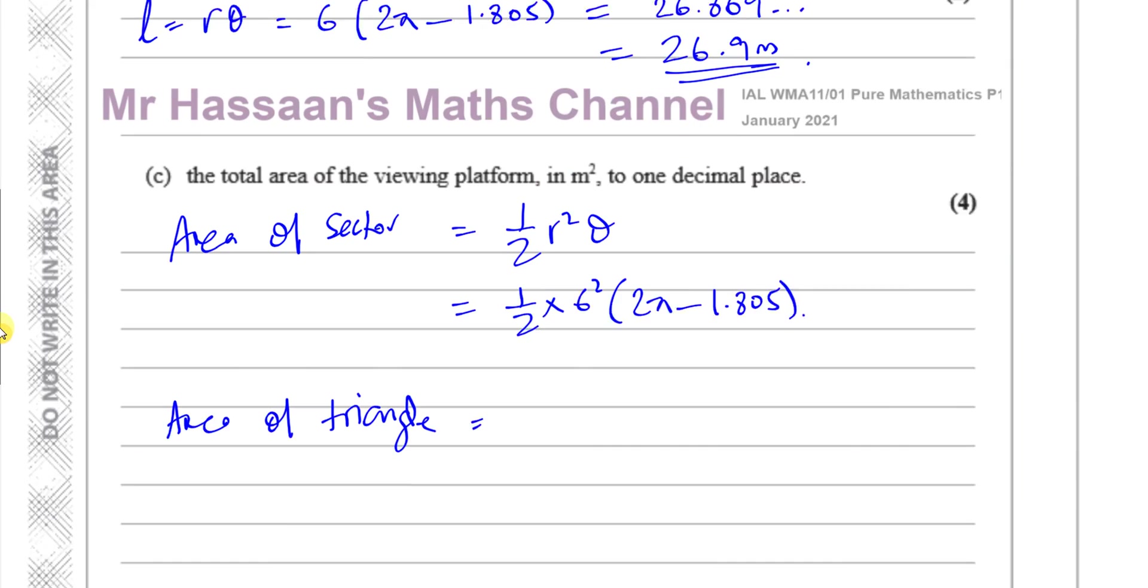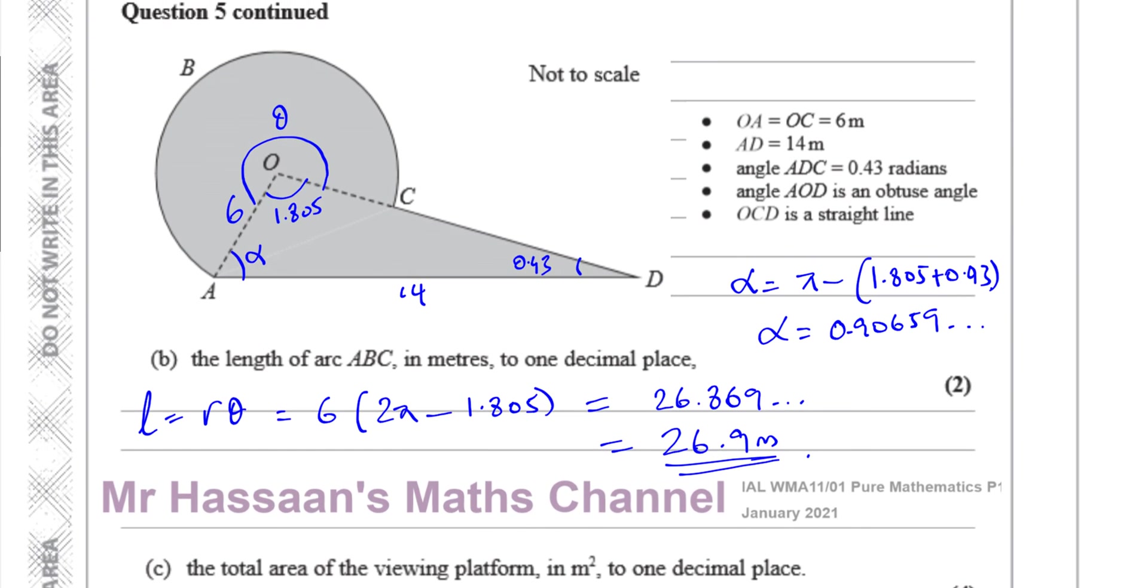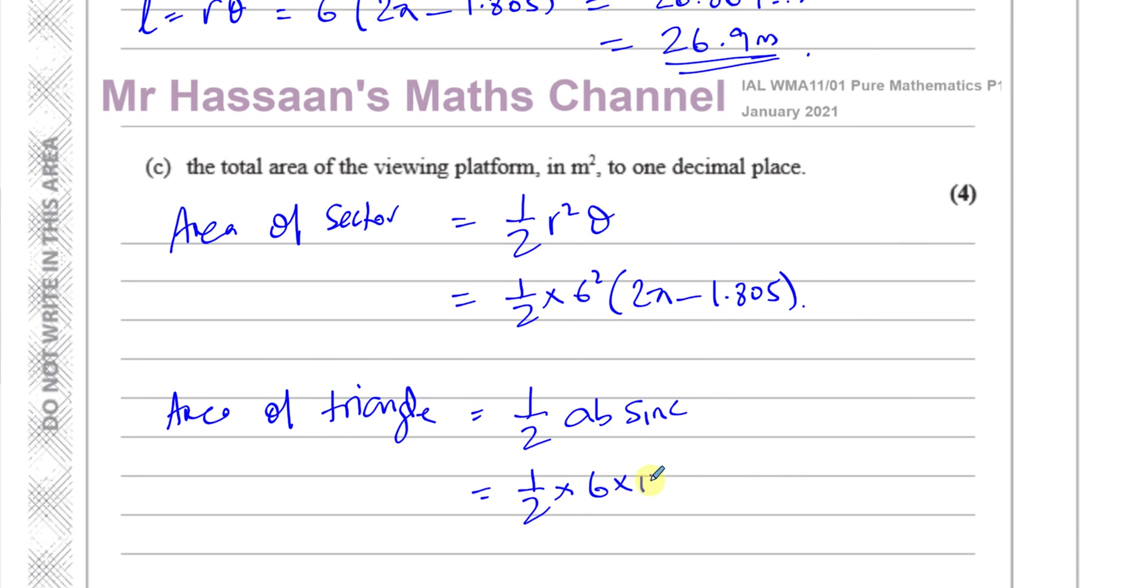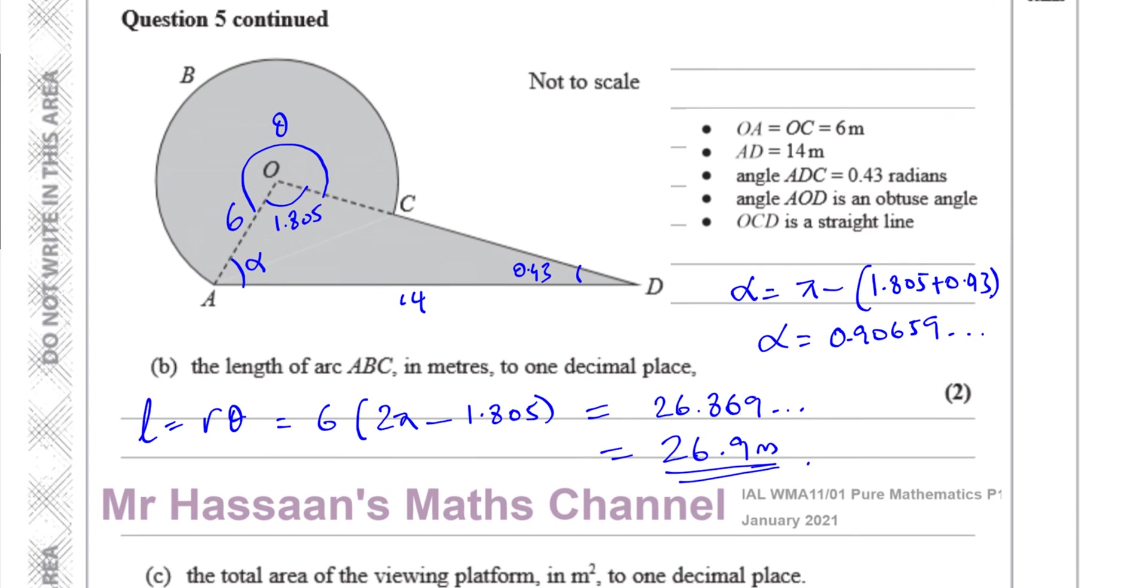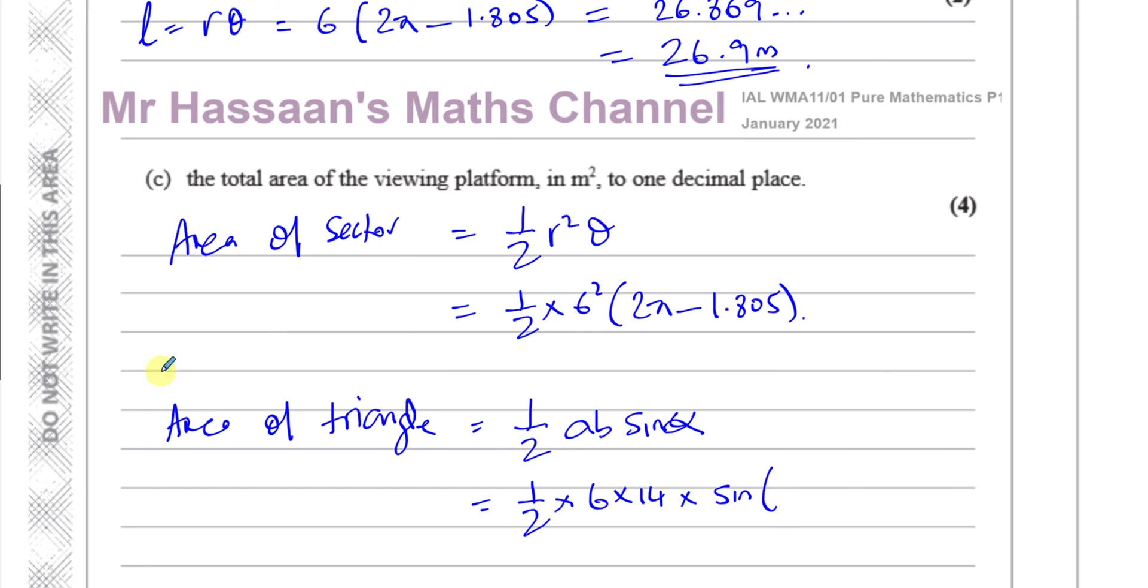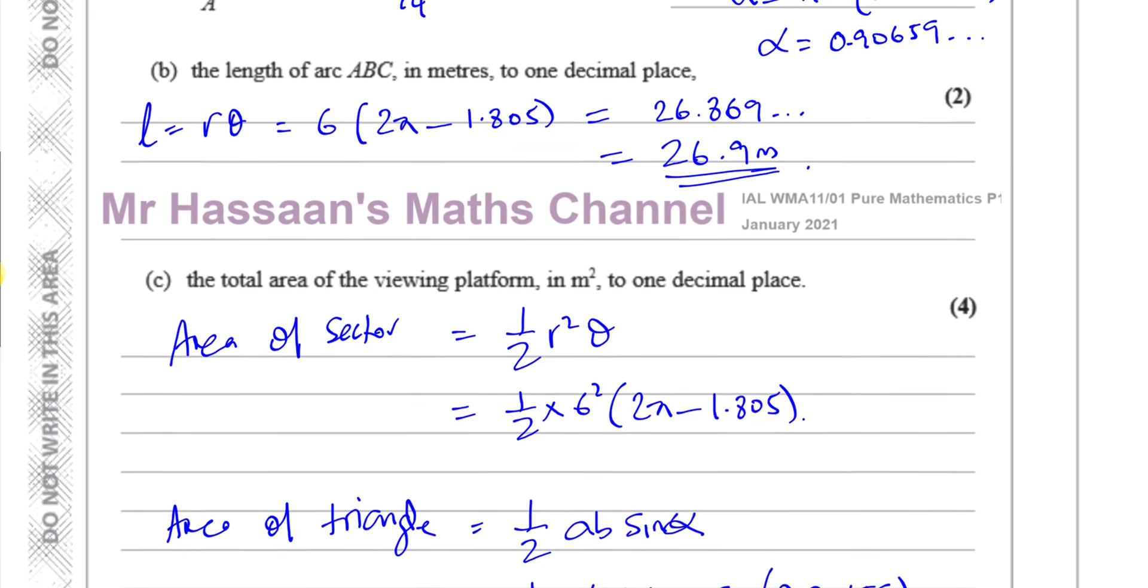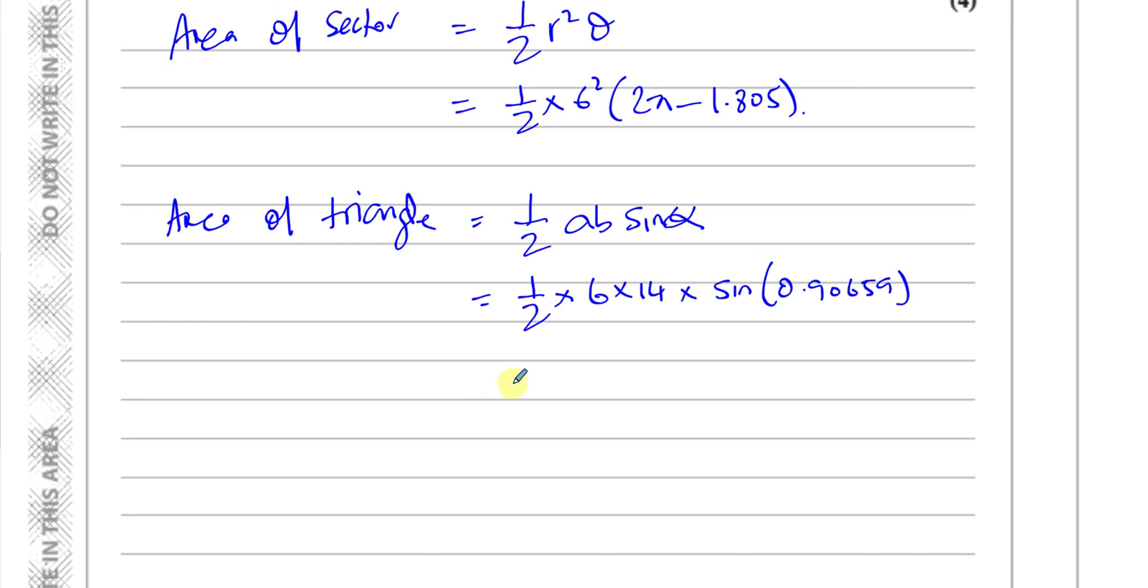So alpha is equal to pi minus 1.805 plus 0.43, and that gives me 0.90659. That's alpha, that's the angle here. So if I do a half times six times 14 times this value, the sine of this value, I will get the area of the triangle. So it's a half a b sine c. So it's a half times a and b are the two sides that make the angle, which are six and fourteen, times the sine of alpha, which is going to be 0.90659.